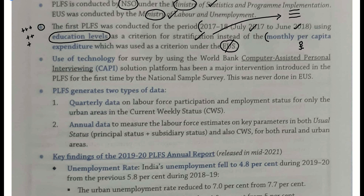Teen conditions toh dono ke liye honi chahiye — 15 to 60 years ka woh ho, willing ho, aur physically and mentally fit ho — jo ki obviously employment ki definition ke andar aati hi aati hai saari cheez se. Lekin education level ek important cheez hai ke nahi hai ki aapka zyada better employment status ho?